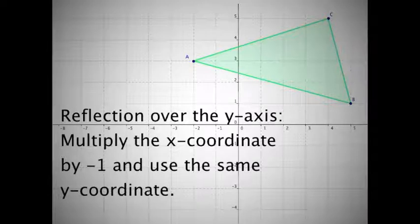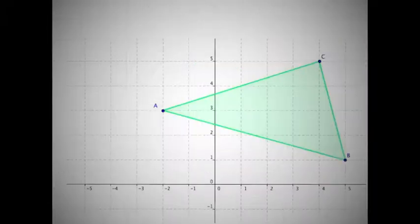The second type of reflection is reflection over the y-axis, and as the name indicates, you're just reflecting the shape over the y-axis. So let's go ahead and take a look at both of those. We'll take a look at reflecting over the y-axis first.